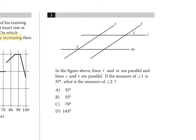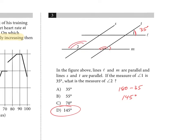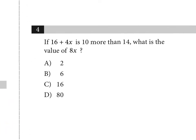Number three: lines l and m are parallel, and s and t are parallel. If the measure of angle 1 is 35, what's the measure of angle 2? Angles 1 and 2 are supplementary — they are same-side exterior angles. So angle 2 equals 180 minus 35, which is 145. Angle 1 is clearly acute and angle 2 is clearly obtuse, so they can't be equal — they must be supplementary.